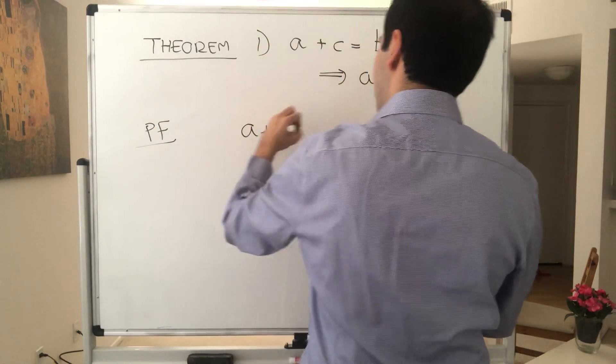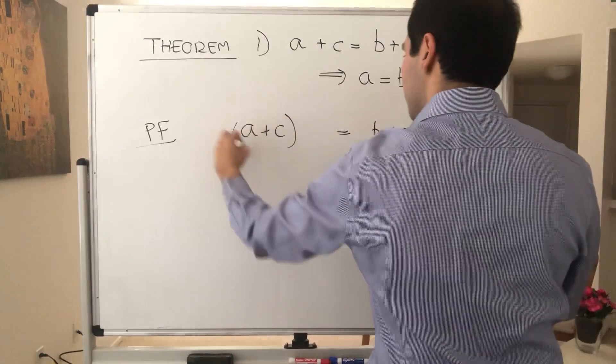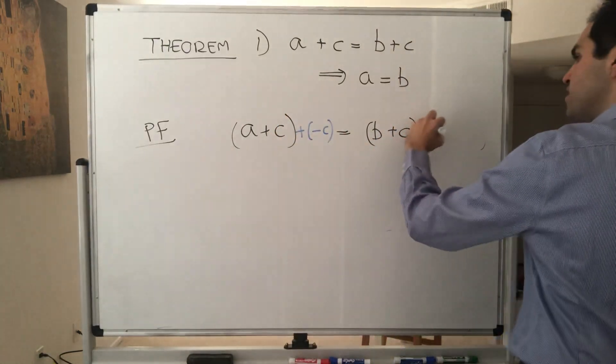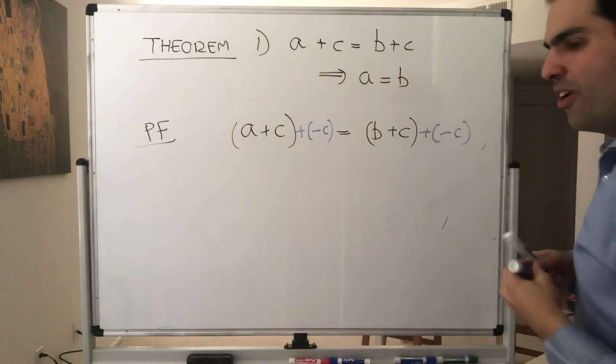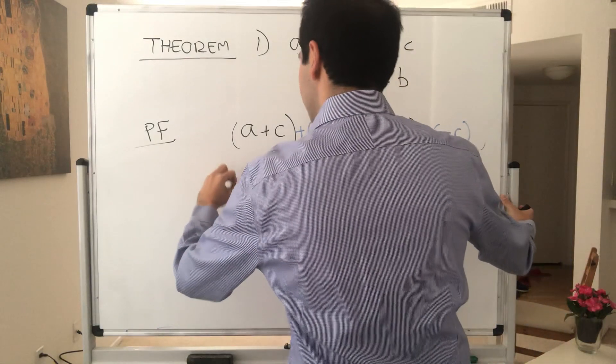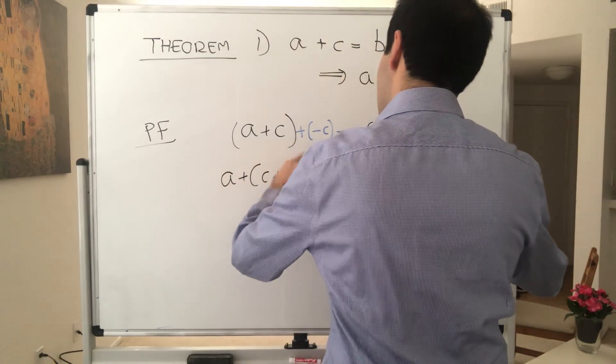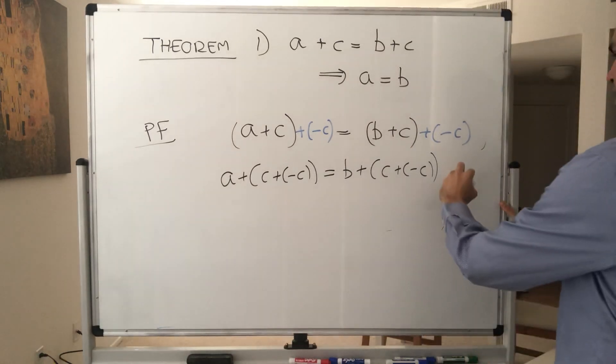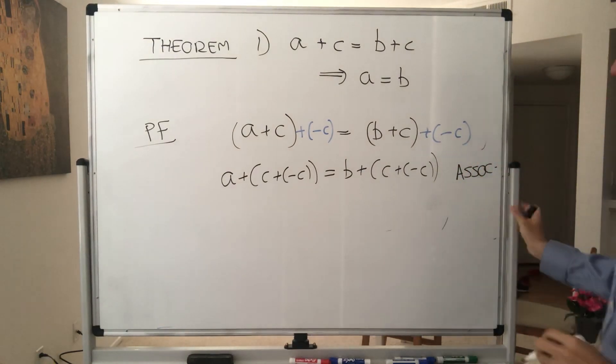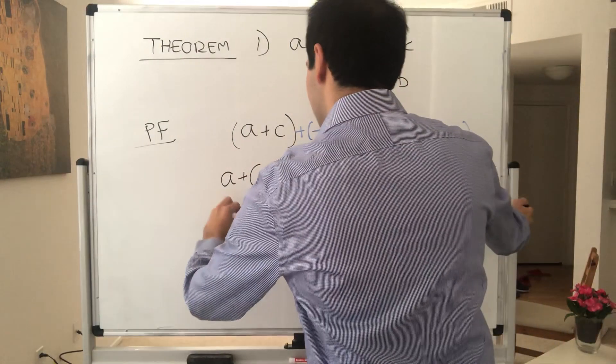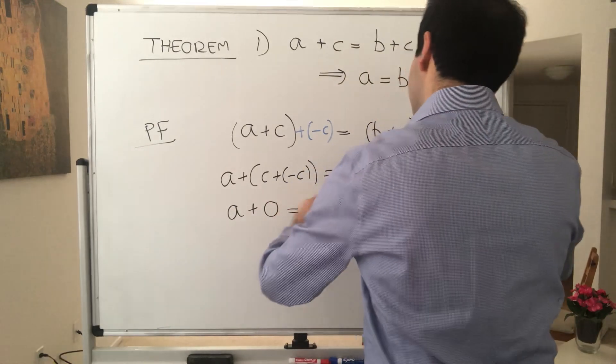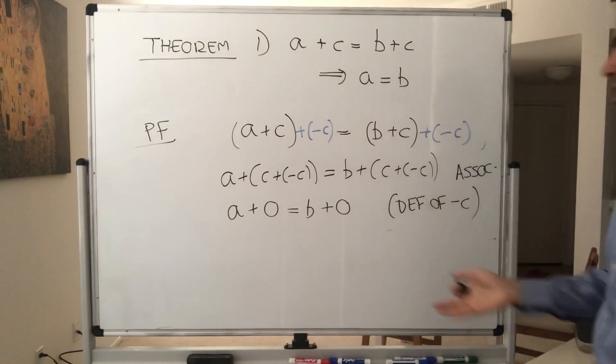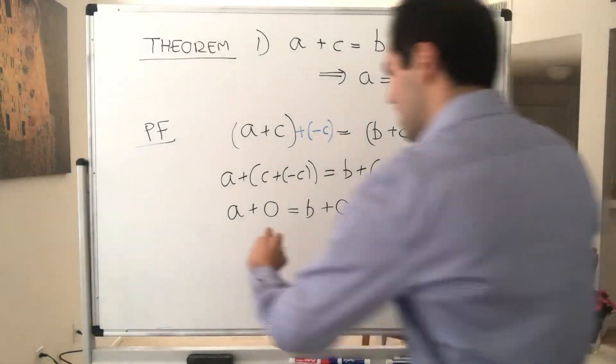So, proof. So consider, start with a plus c equals b plus c, well, and add minus c there. Because we know minus c exists by one of the laws, the additive inverse law, but then by associativity, we get a plus (c plus minus c) equals b plus (c plus minus c). But then by additive inverse, we know c minus c is zero. So a plus zero equals b plus zero. It's basically the definition of minus c. And last but not least, by definition of zero, we get a equals b.